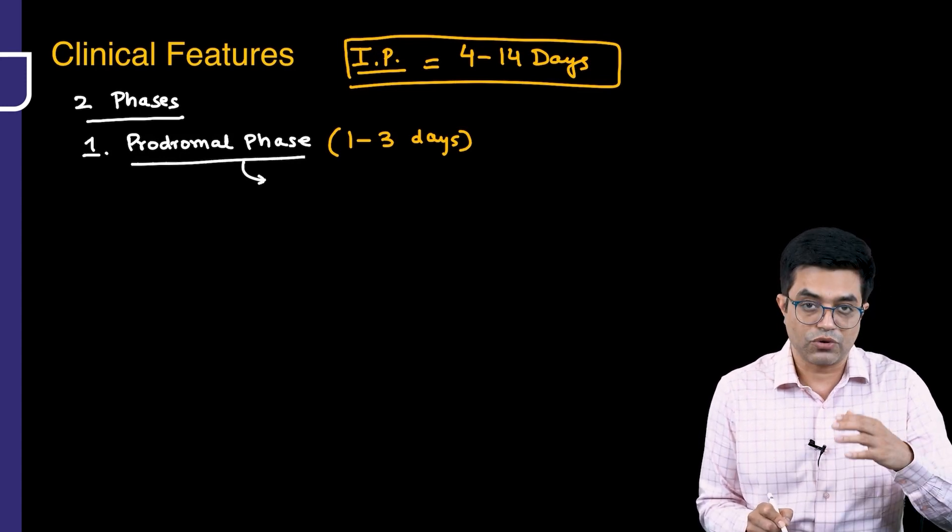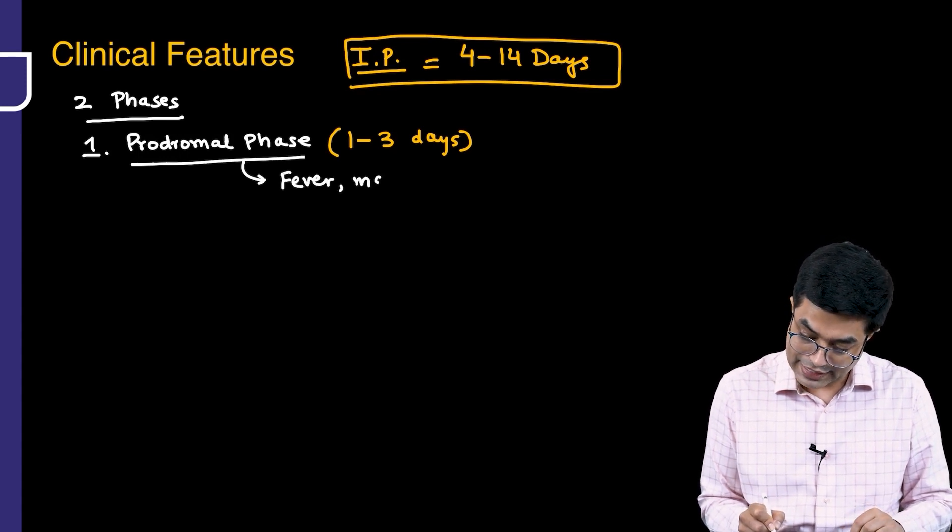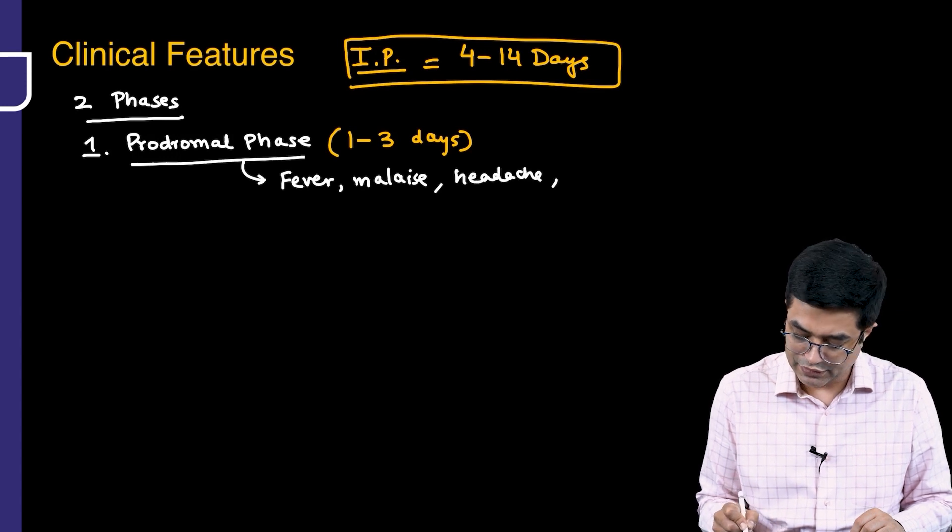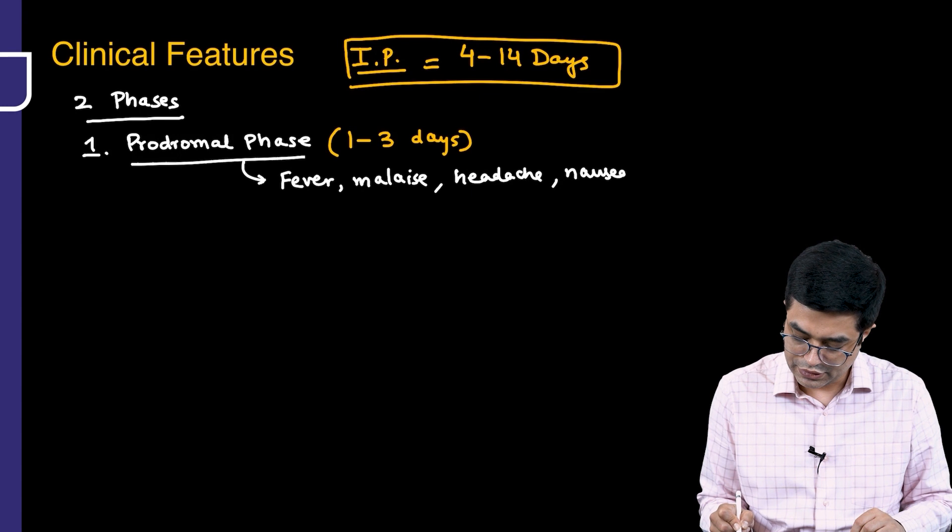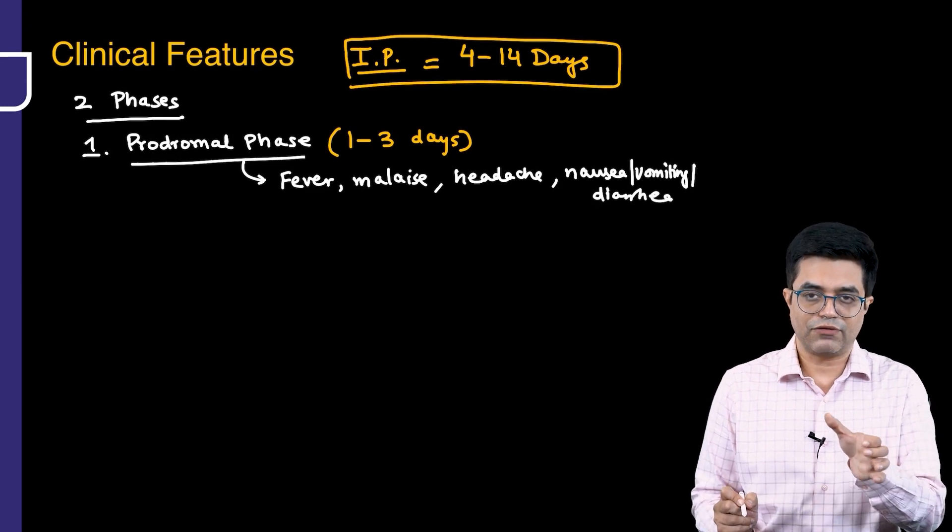In the prodromal phase, you see the usual viral prodromal features. There will be fever in the child, malaise, headache, sometimes nausea or vomiting, and rarely some degree of diarrhea. This prodromal phase will last for 1 to 3 days.